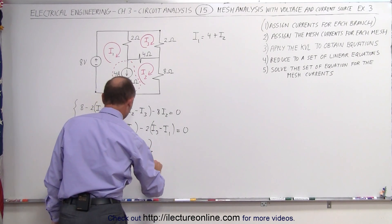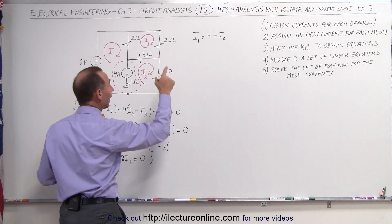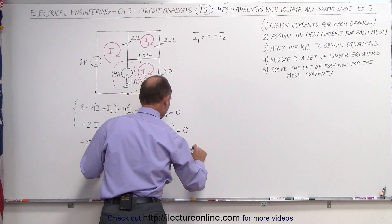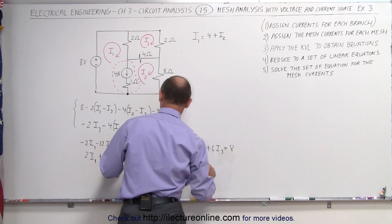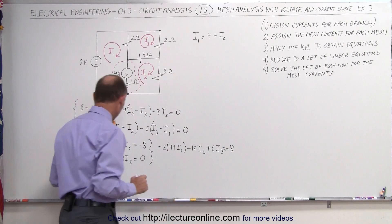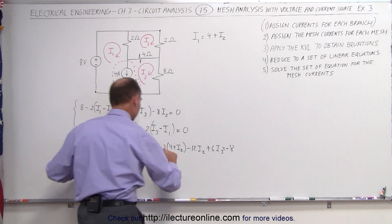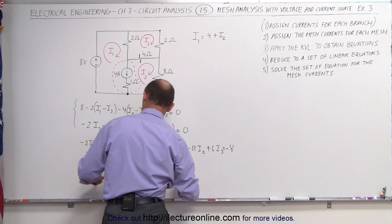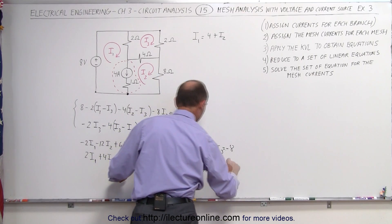If I do that, I get the following. Those two equations now become minus 2 times I1, which is 4 plus I2, minus 12I2, plus 6I3, equals minus 8. The second equation, again, substituting for I1, 4 plus I2, I get 2 times 4 plus I2, plus 4I2, minus 8I3, equals 0.